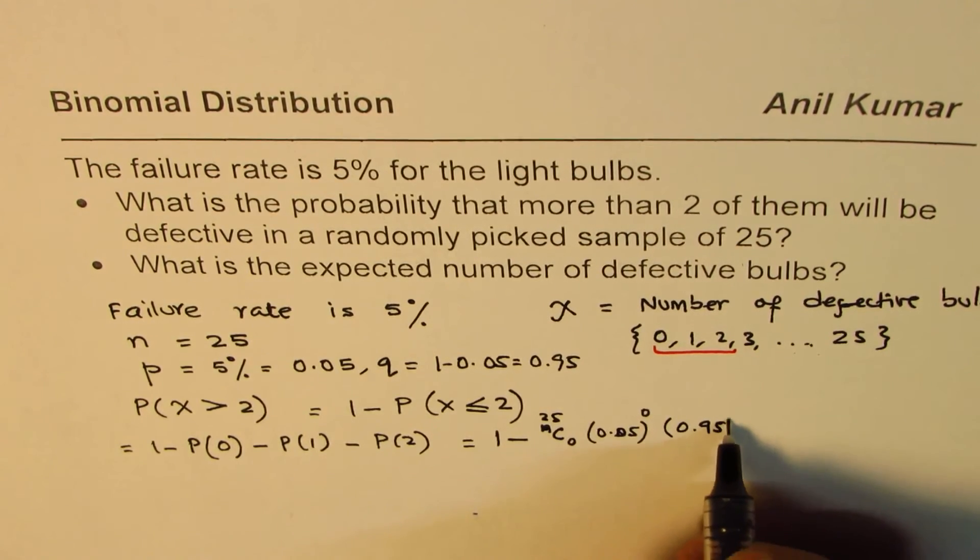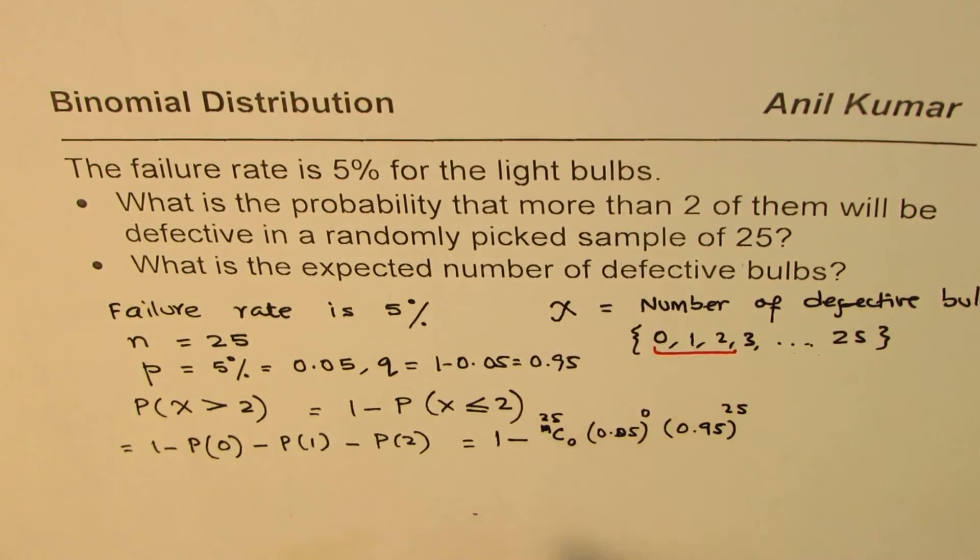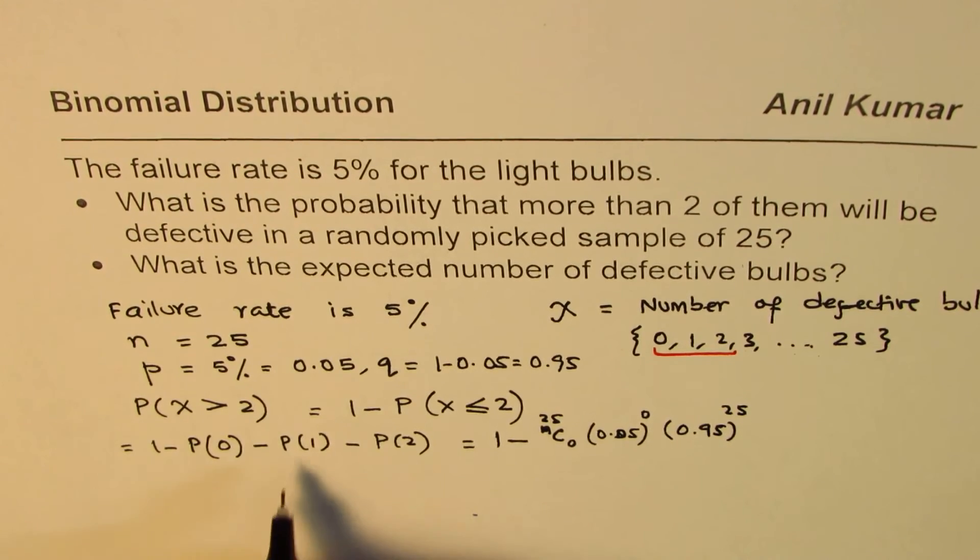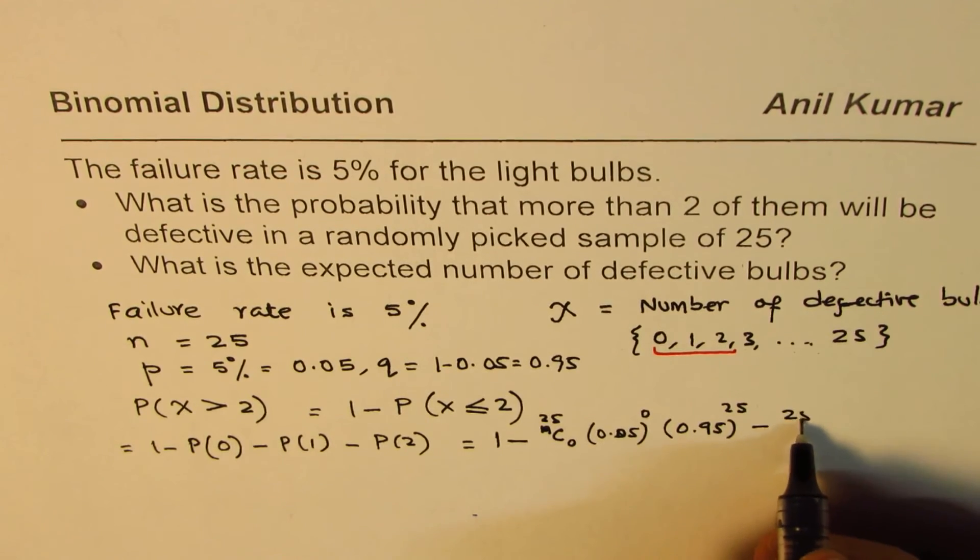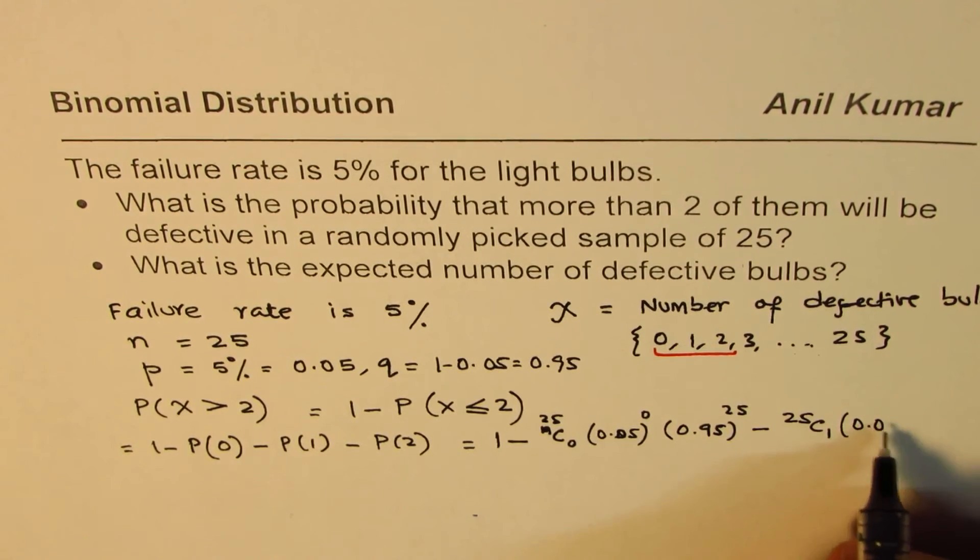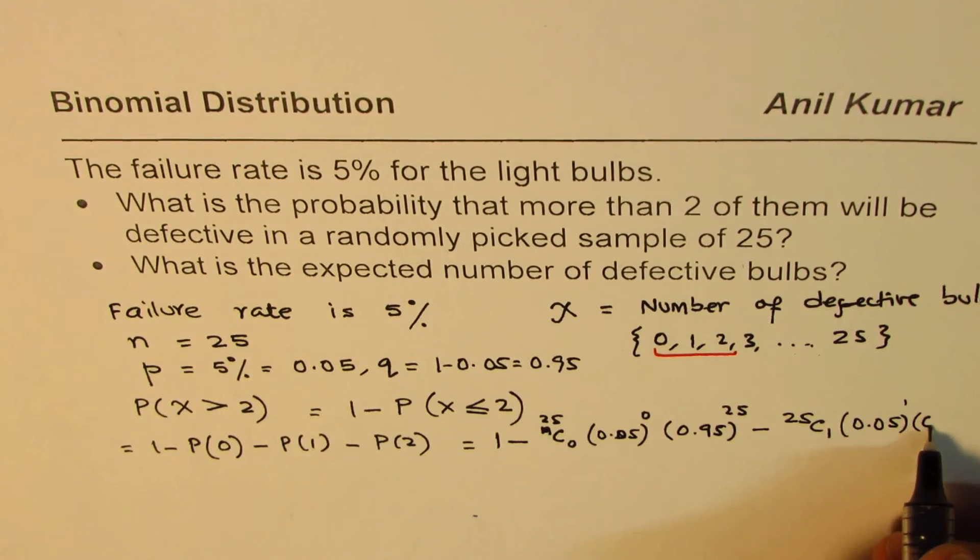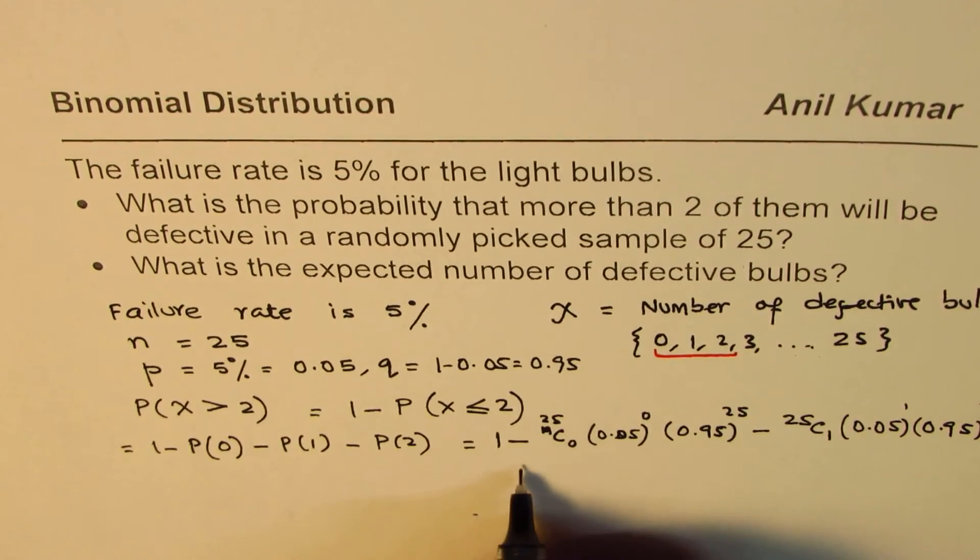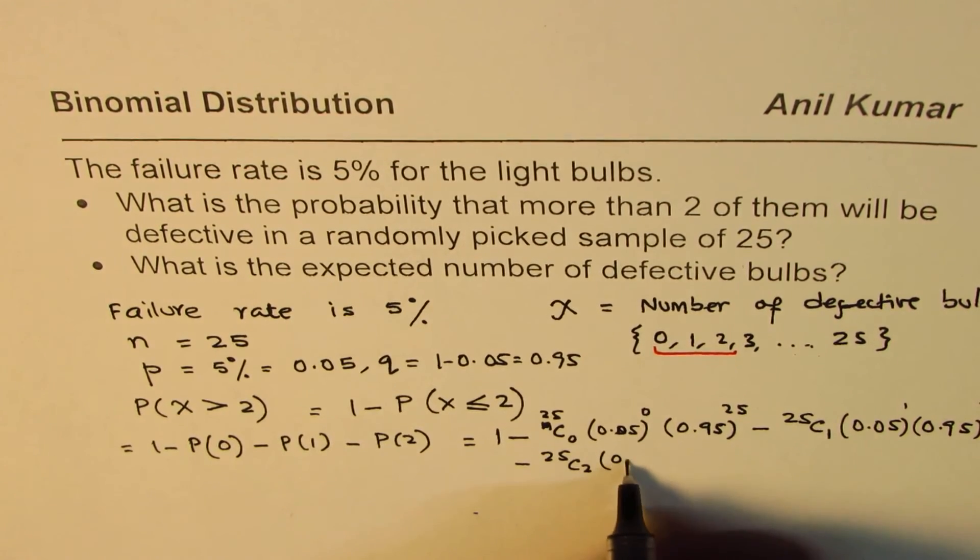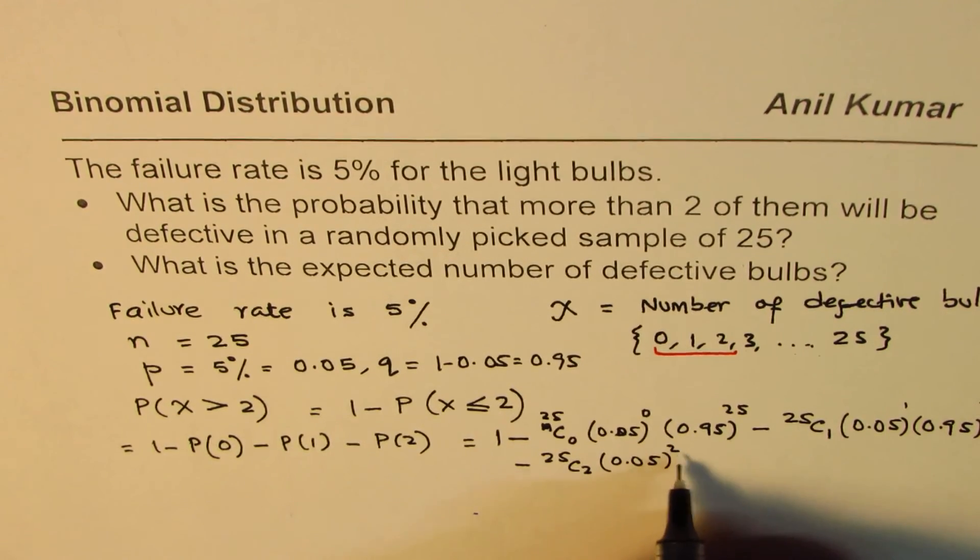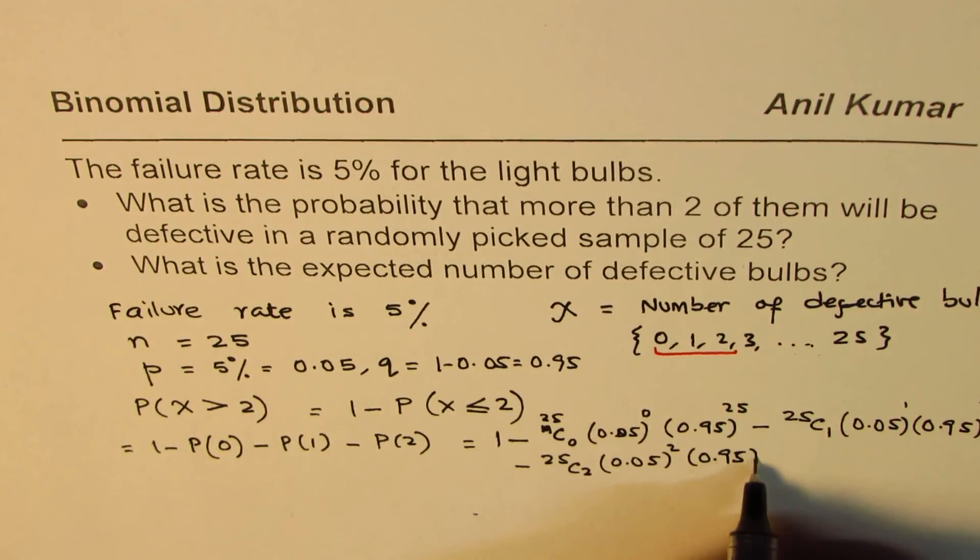25C1 times 0.05 to the power of 1 times 0.95 to the power of 24. And 2 defective will be 25C2 times 0.05 to the power of 2 times 0.95 to the power of 23.